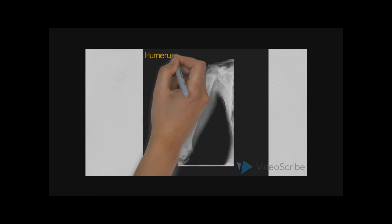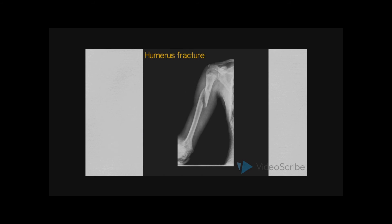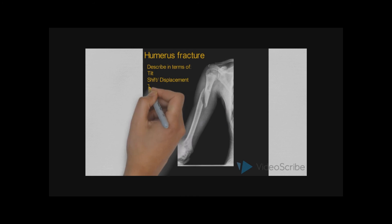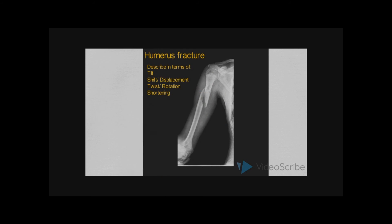We then move on to describing fractures of the humeral shaft. When describing any fracture, we need to assess the following parameters: is there presence of tilt, twist, shift, or shortening in the fracture. Tilt describes the degree of angular displacement with respect to the most distal component of the fracture. Twist describes the rotational displacement of a fracture; fractures with evidence of rotational displacement usually correlate with high-energy injuries. Shift describes translation of the distal fracture segment in the medial, lateral, anterior, and posterior plane. Shortening describes a reduction in the distance between the proximal and distal margins of a bone.